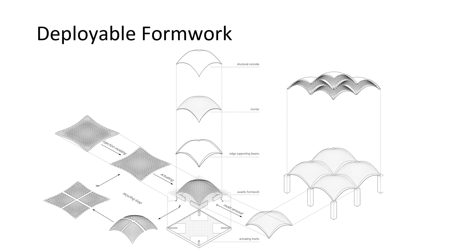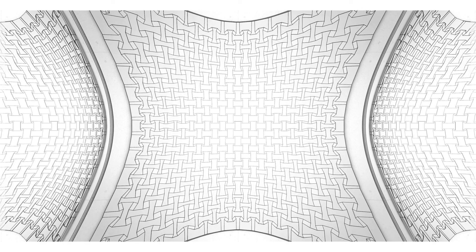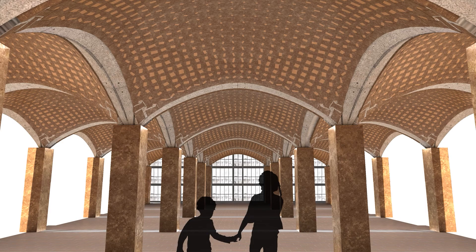This formwork system is deployable. The volume with gaps can be prefabricated in factory using injection mold. On the construction site, a wheel track system can provide actuation. Concrete can then be poured on top, leaving the Guastavino-like texture in the bottom. Here is a visualization of the ceiling of our vault. The geometric pattern preserves the trace of deployment, as well as provides its unique aesthetic qualities.